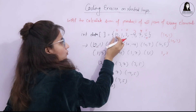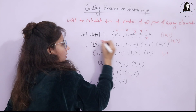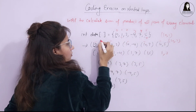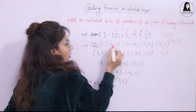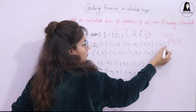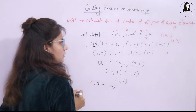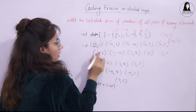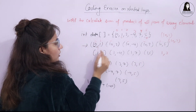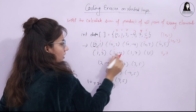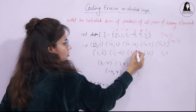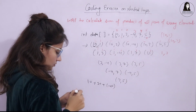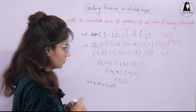In the outer loop i, we access 10 repeatedly for each of its pairs. In the inner loop j, we iterate through 1, 3, -4, 7, 5. Here i stays the same while j changes for each iteration of the inner loop.